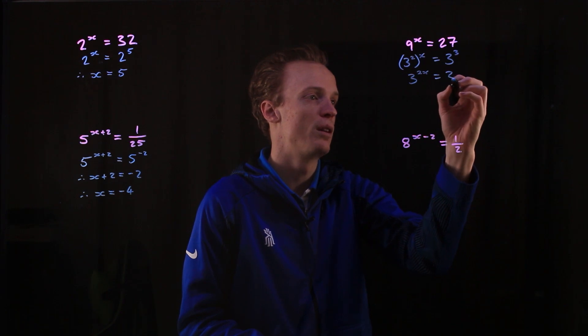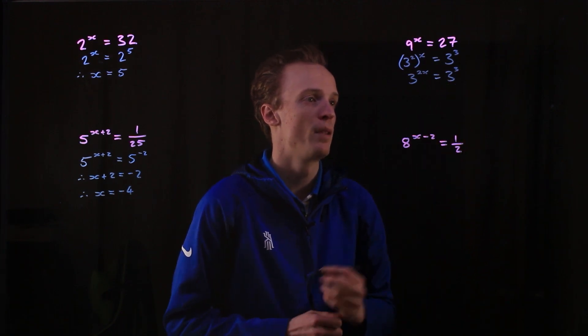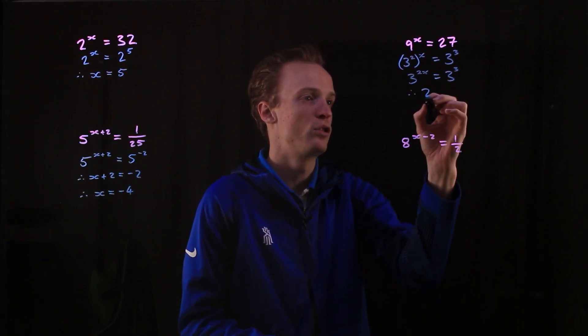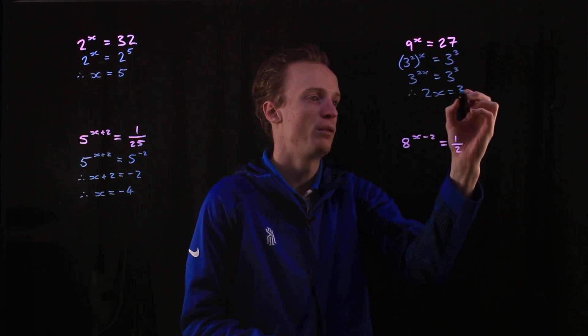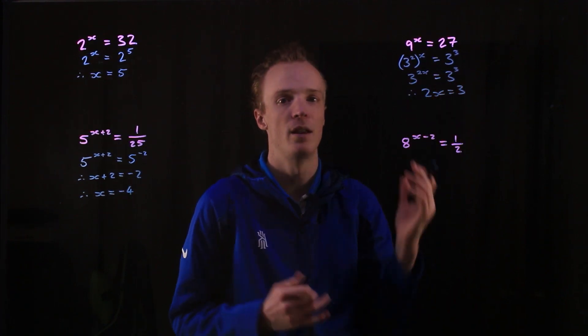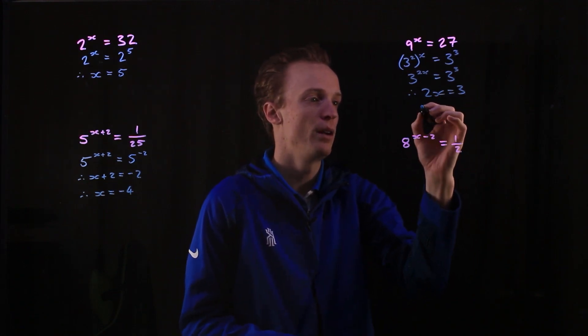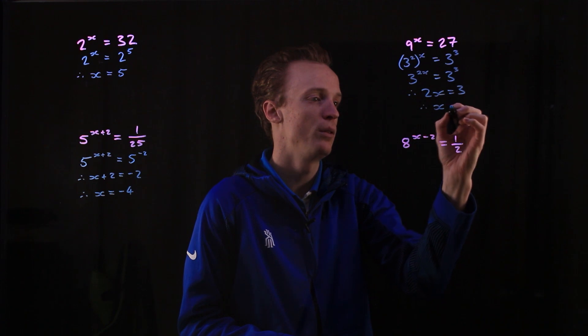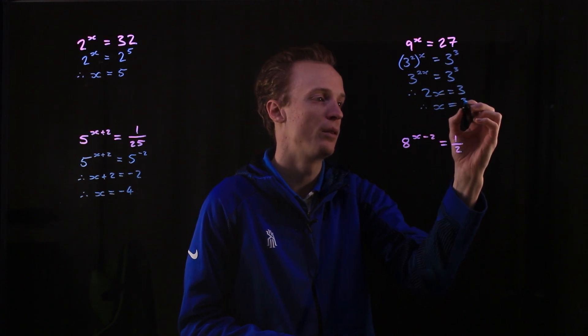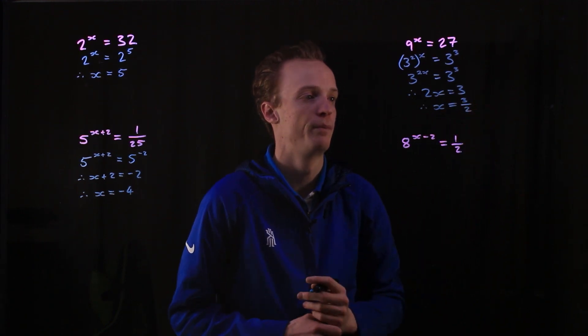So that means that my 2x must equal 3, because the bases are now the same, the exponents must equal each other. So if my 2x is equal to 3, dividing both sides by 2, therefore my x must be equal to 3 over 2, for this to be true.